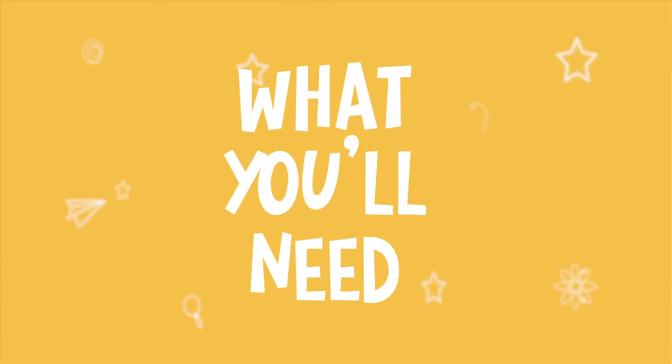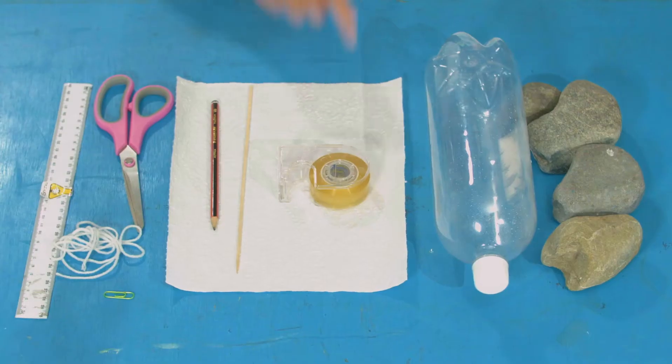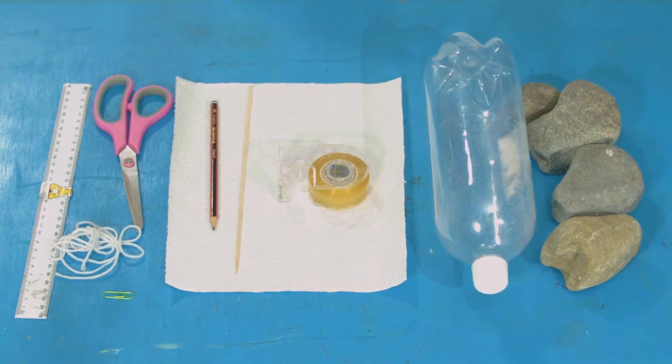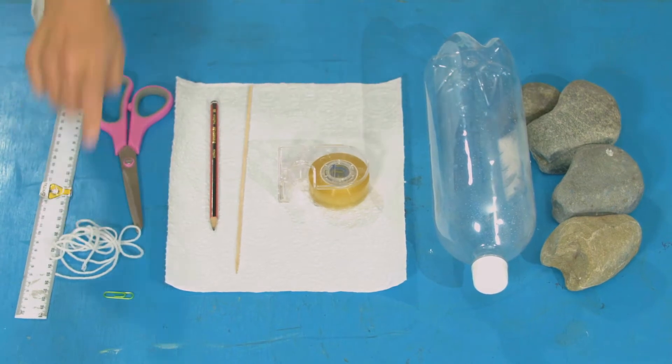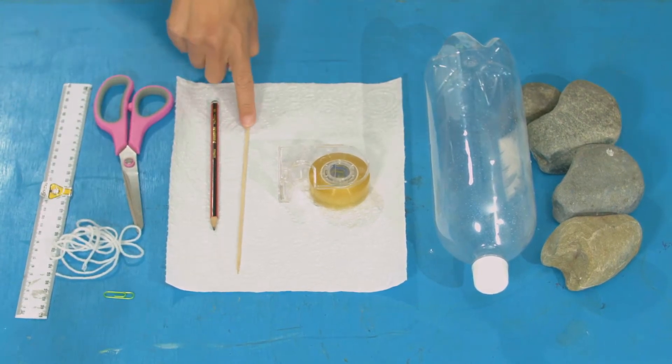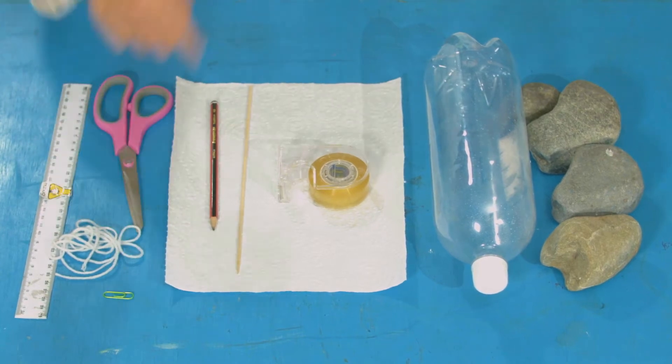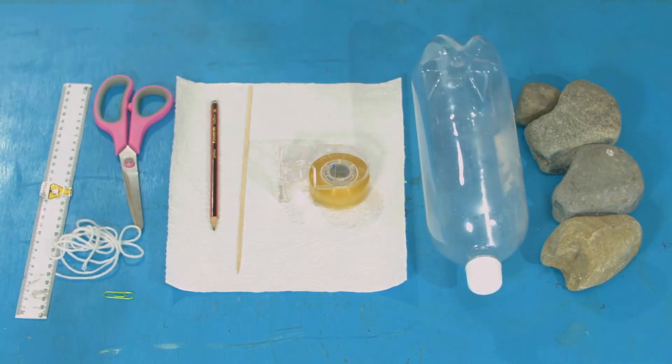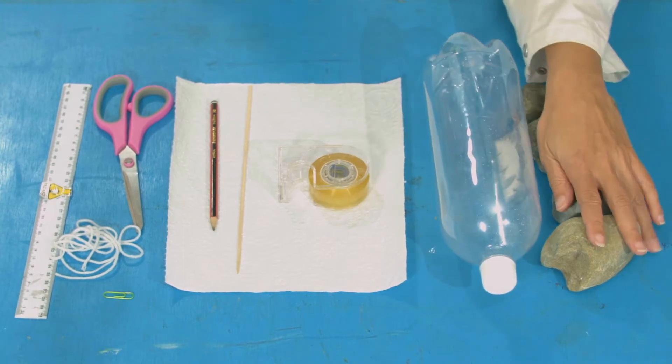But if I'm going to build my super strong rope I'm going to need to test this theory. For this experiment you will need one sheet of paper towel, ruler, scissors, tape, string, a skewer or a stick, pencil, paper clip, an empty bottle or a bucket, some heavy things—I have some rocks—and a long straight thing like a pole or a broom handle or a wooden spoon.